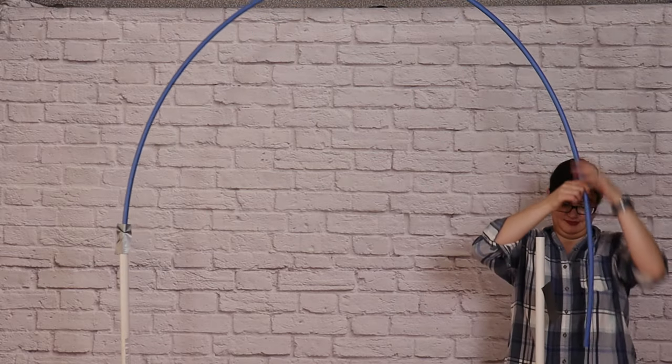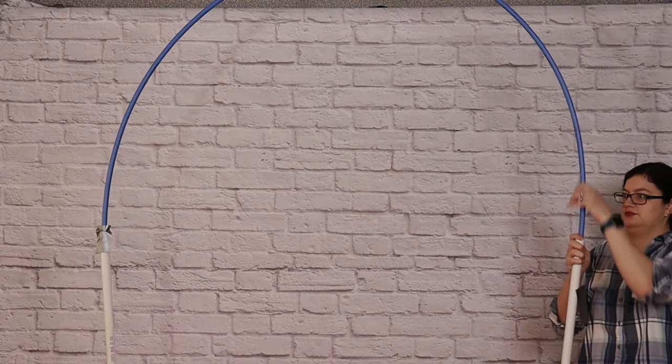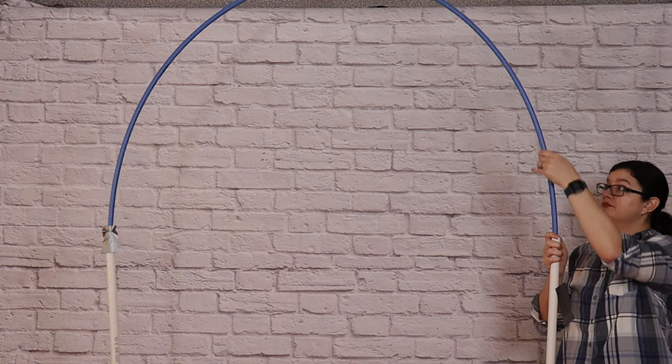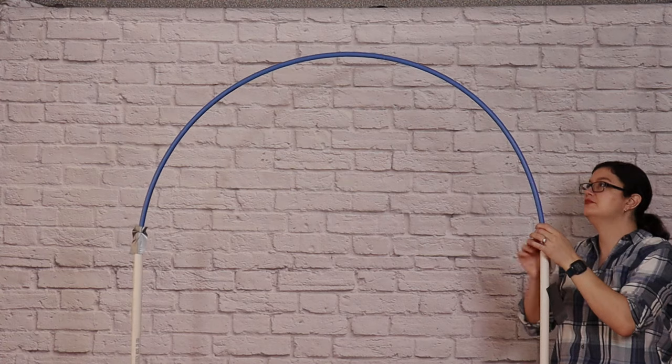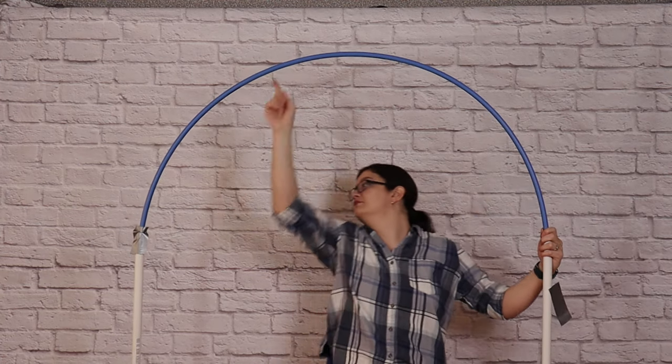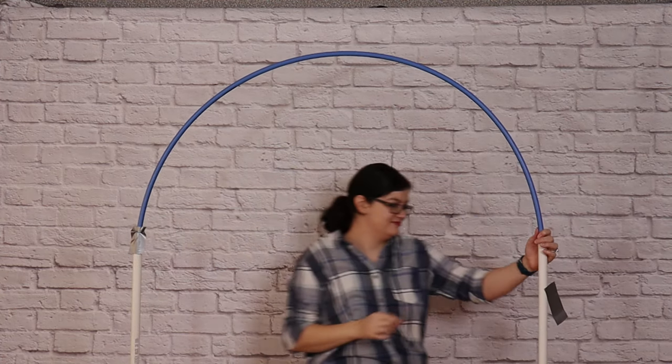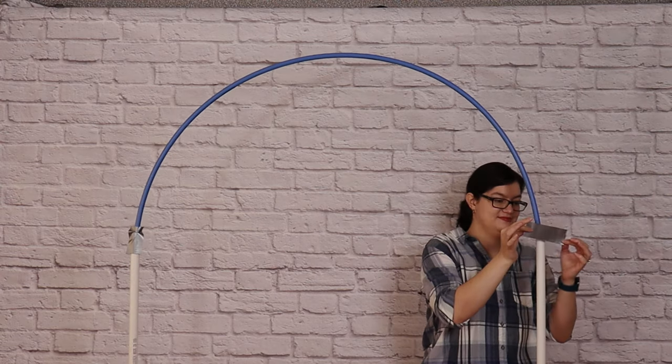Now we're going to move over to the other side and do the exact same steps, only this time I'm going to insert three feet of the PEX pipe or three marks down into my PVC pipe, which means I have a total of six feet creating that beautiful curve at the top of my arch. Then you can just add that final piece of tape over that joint. And this arch is ready to go.